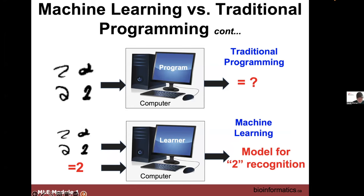Machine learning can also do more unusual things. If you gave a regular program different versions of the written number two, it would have no idea what you're doing. But a learning program designed for character recognition would handle this — the input is many different ways of writing the number two, with a label saying all of these are the number two, and the program learns to do letter or number recognition.